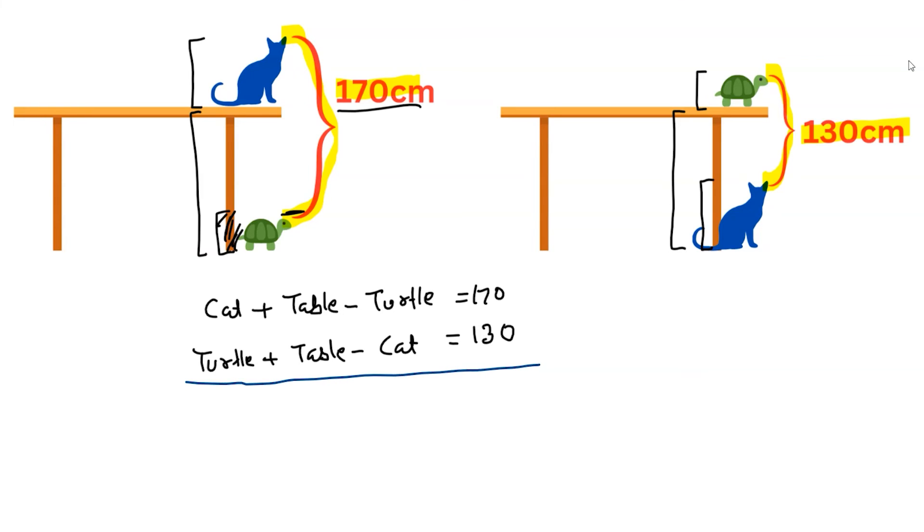Now add both equations. What will happen? This cat positive, this cat negative, so when you add they both will cancel out. Similarly, turtle has a minus sign, this turtle is positive. When you add, both will cancel out.